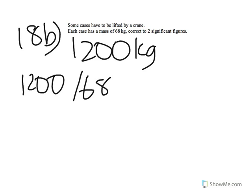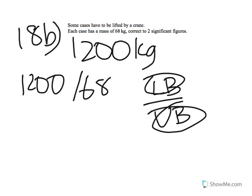To find the lower bound when dividing, you use the lower bound of the numerator divided by the upper bound of the denominator. So the lower bound must be the numerator and the upper bound must be the denominator — this gives you the lower bound of the division.